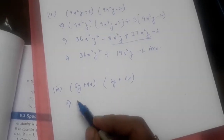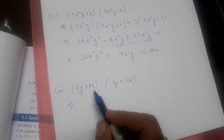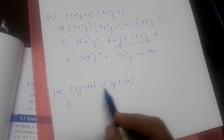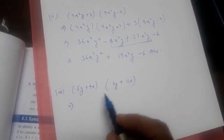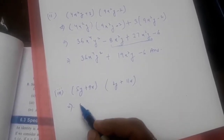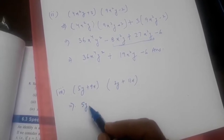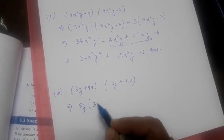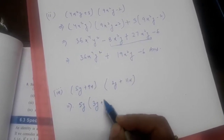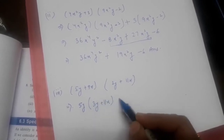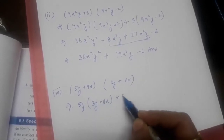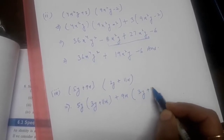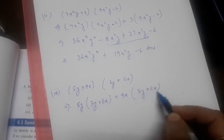So in our third part, (5y + 9x)(3y + 11x) are getting multiplied. So our first step: 5y will be multiplied by (3y + 11x), then 9x will be multiplied by (3y + 11x).